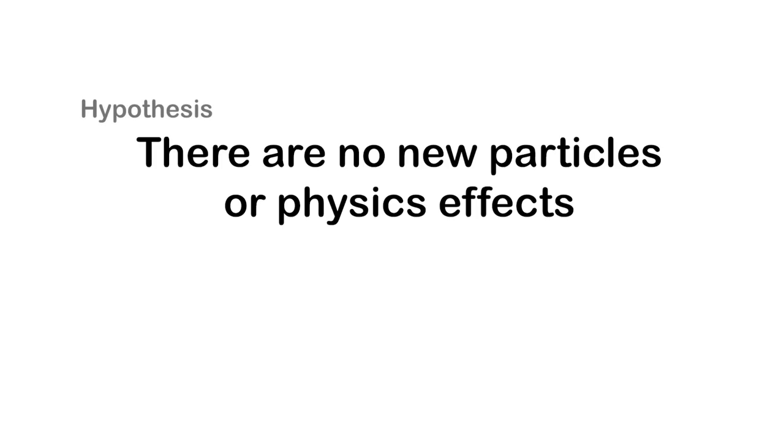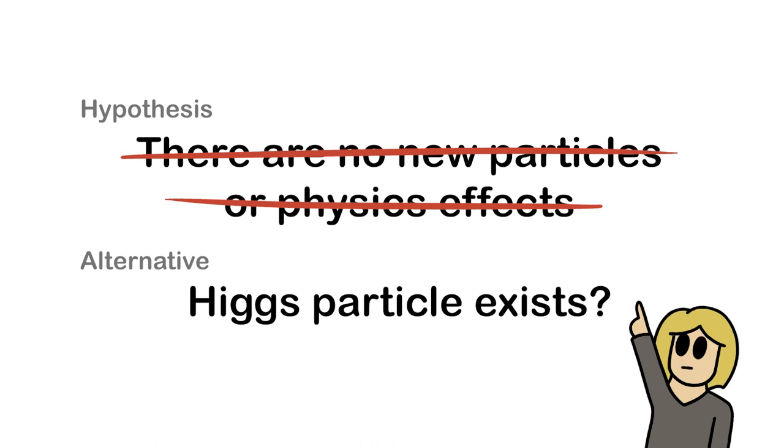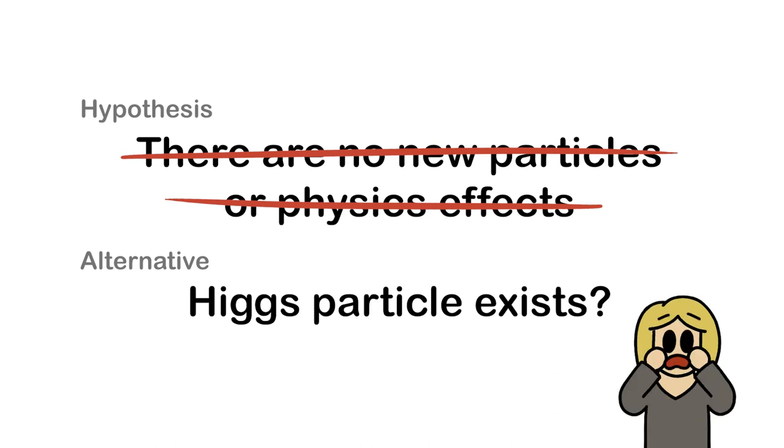So yeah, we can definitely say that our expectation of no new particles is wrong, but does that also mean the existence of the Higgs particle? Our expectation, no new particles, might be wrong, but that does not automatically mean that our alternative explanation, there is a Higgs, is right.